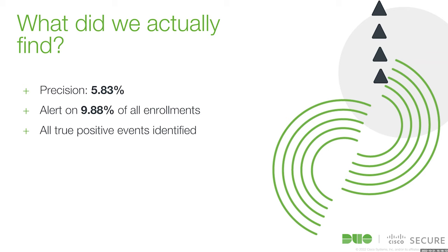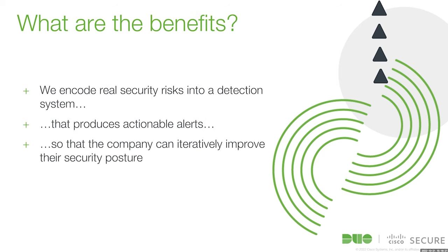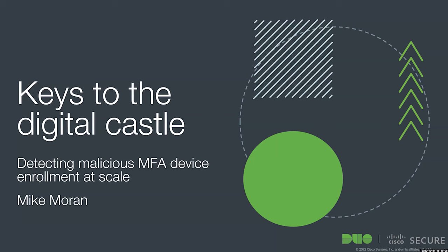We do have the benefit that all of those true positive events are identified by these heuristics. So there are grounds for looking at the real attack data and not just saying what's going on. What we gain from this: we've encoded real security risks into this simple detection system — a couple of simple rules that produce actionable alerts — and that leads to our customers hopefully improving the security of their own systems. Let's make sure user accounts are fully deprovisioned during the offboarding process, and let's think about disabling tampered devices or outdated operating systems so that they not only stop potential attacks now, but are in a more secure state in the future to prevent future ones.